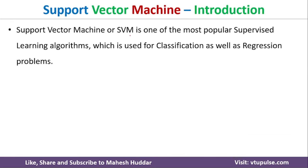Support vector machine, or SVM, is one of the most popular supervised machine learning algorithms, used to solve classification as well as regression problems. Supervised means we need to give labeled data as input to this algorithm. Classification problems are those where the target contains a discrete number of possibilities.